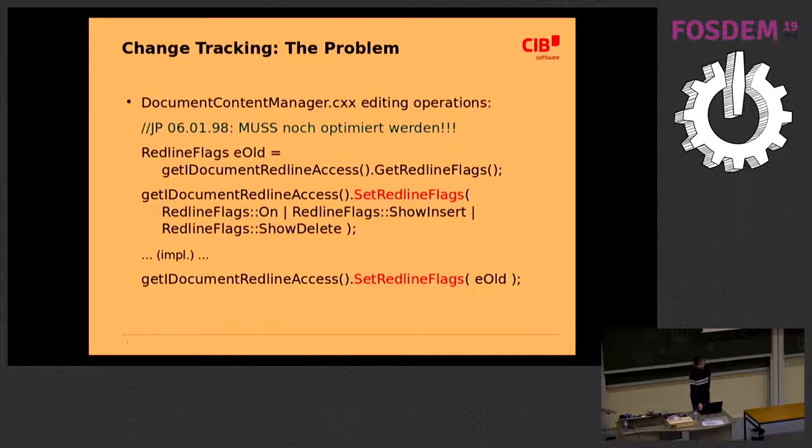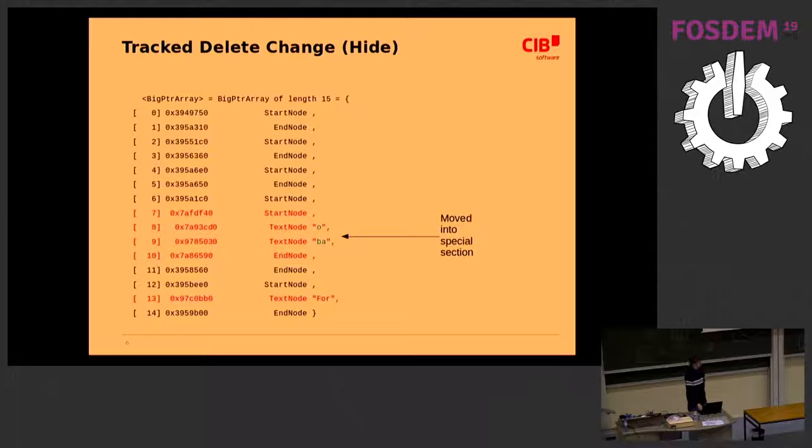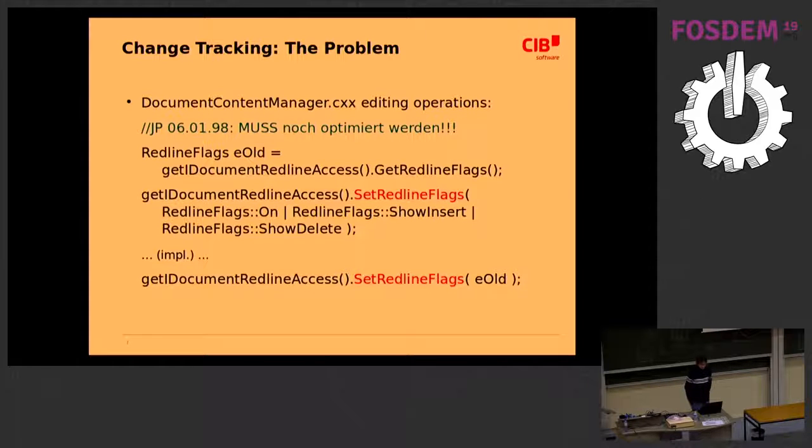In order to implement this view option, we have to actually modify the model. This gives rise to a performance issue where we have editing operations such as deleting text. The implementation first saves the current setting of the document model show or hide, then moves the red lines into the body text because the implementation of these editing operations can only be performed if the red lines are in the body text. At the end, the red lines are moved again to where they were previously.